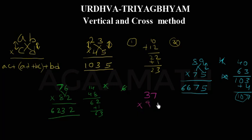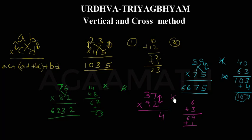Let us take another example into 92. First, 7 into 2 is 14, write 4 and carry 1. Cross: 3 into 2 is 6, and 7 into 9 is 63, total 69, plus carried 1 is 70. Write 0 and carry 7. Then vertical: 3 into 9 is 27, plus 7 is 34. So the result is 3404.